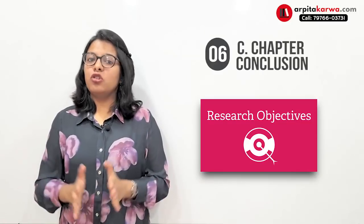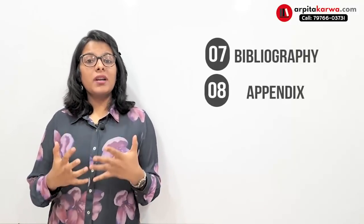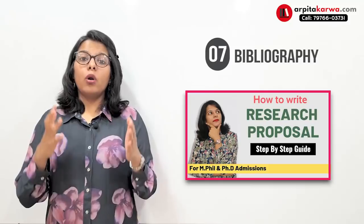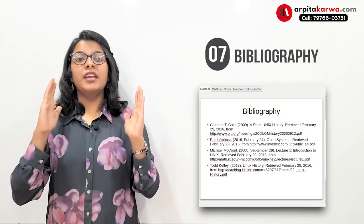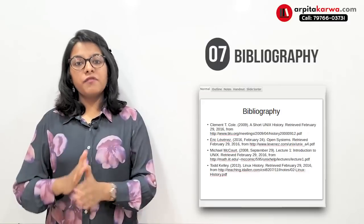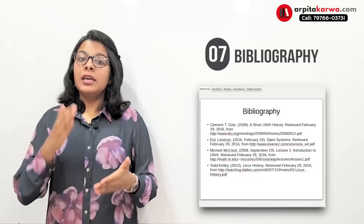Now that you have completed the main body of the thesis, you come to the end, which includes two things: bibliography and appendix. Bibliography is the area where you write all the sources and works you referred to during the research. Bibliography is divided into two parts: primary sources and secondary sources. In primary sources, you write the main books, movies, or works that are the central concern of your thesis.